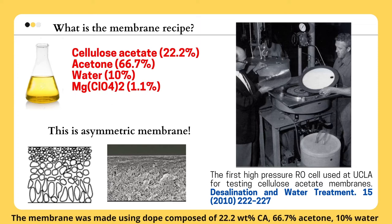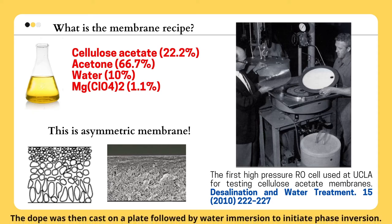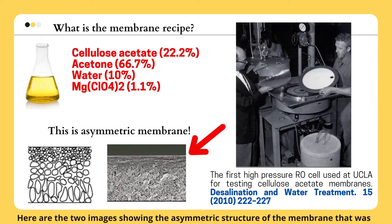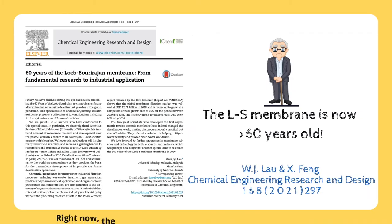The membrane was made using a dope composed of 22.2 weight percent of cellulose acetate, 66.7 percent acetone, 10 percent water, and 1.1 percent of magnesium perchlorate. The dope was then cast on a plate, followed by water immersion to initiate phase inversion. Here are the images showing the asymmetric structure of the membrane, composed of an extremely thin dense layer supported by a spongy-like structure.